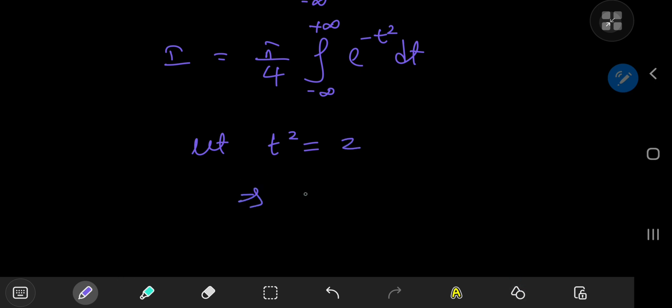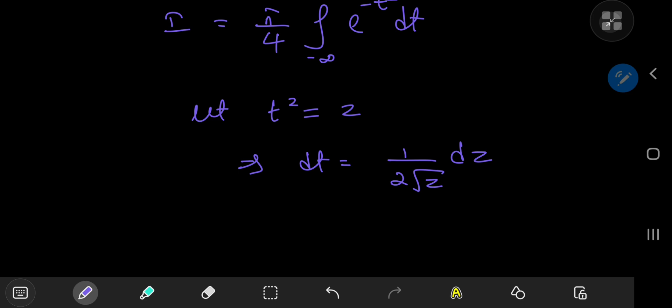And it starts off by letting t squared equal to some new variable. Let's call it z for a change. So let t squared equal to z, which implies that dt equals 1 by 2 times square root z dz. And this implies that i equals, wait a second.